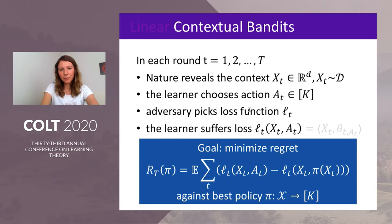The goal of the learner is to minimize regret. Regret is the difference between the cumulative loss of the learner and the cumulative loss of the best policy, where a policy is a mapping from the set of contexts to the set of actions. The best policy is the one that achieves the minimum cumulative loss for the given sequence of losses.